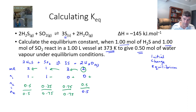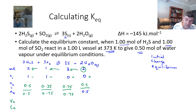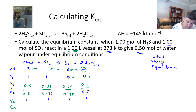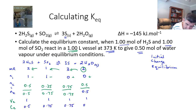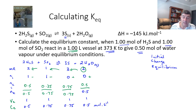To calculate the equilibrium constant we need the concentration at equilibrium, which requires the volume. We're told it's a 1-litre vessel, and that won't change. Dividing each equilibrium mole value by 1 litre gives us concentrations of 0.5, 0.75, 0.75, and 0.5 mol/L at equilibrium.